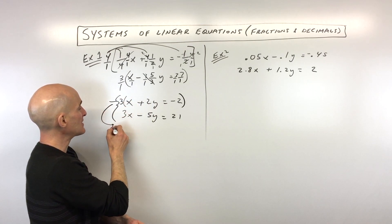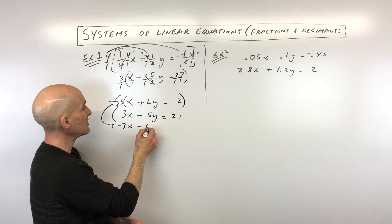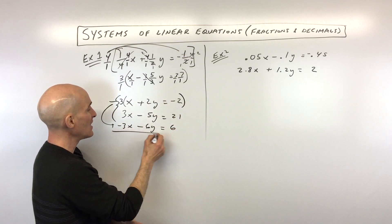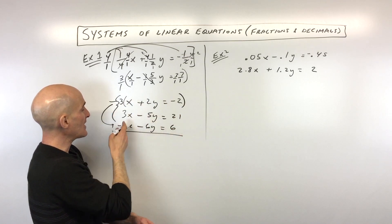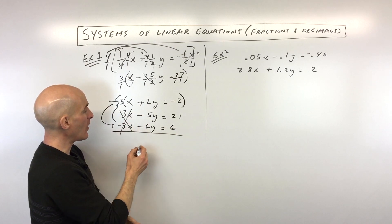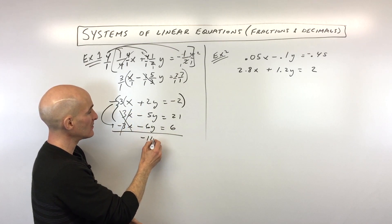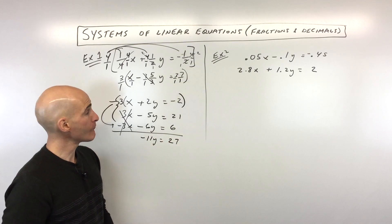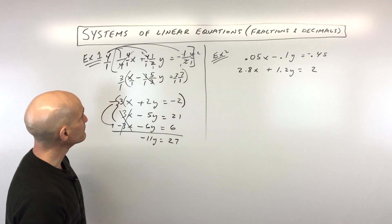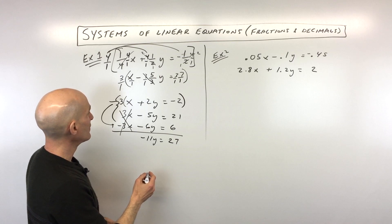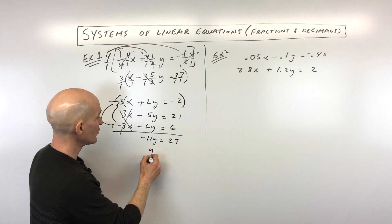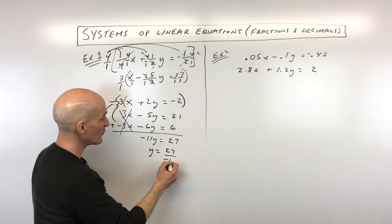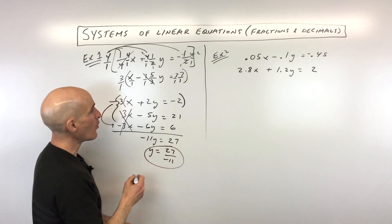If we multiply by negative 3, we're going to get negative 3x, negative 6y, and negative 3 times negative 2 is positive 6. Now when we add, those x's are canceling one another out because one's positive and one's negative. And over here we've got 27. So this is coming out to a slightly unusual answer, but that's okay — we're going to divide everything by negative 11. So y equals 27 over negative 11.